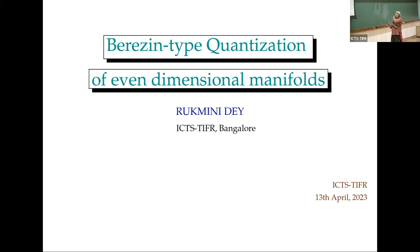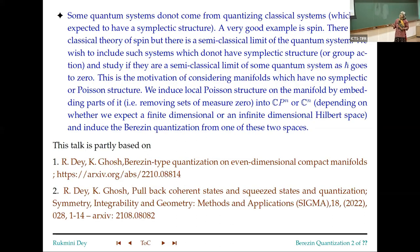I'll be talking about Berezin-type quantization of even-dimensional manifolds, and mainly I'll be talking about CP^N because that's going to be our model. So first, the first part is just going to be about CP^N. Let me tell a little bit about our motivation. Some quantum systems do not come from quantization of classical systems because classical systems are expected to have symplectic structure.